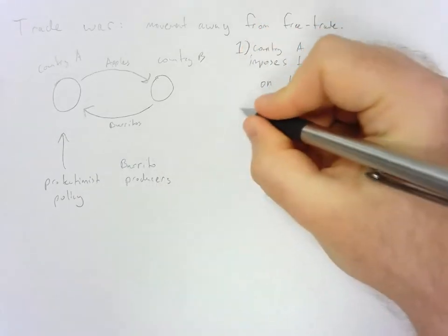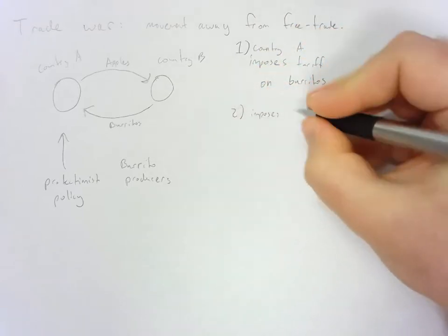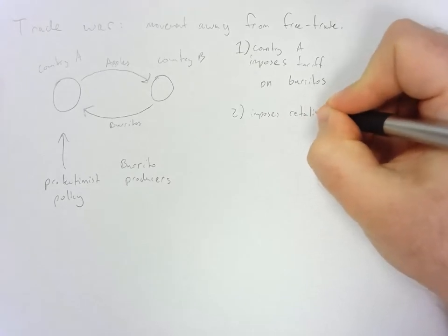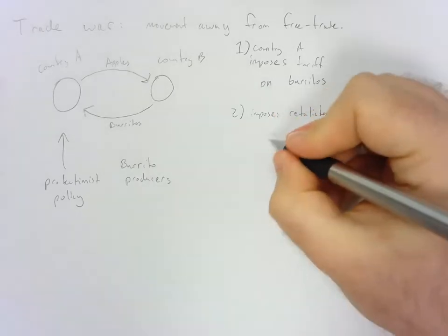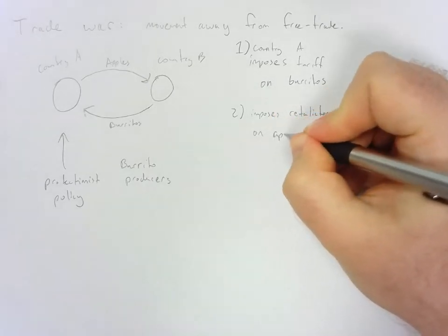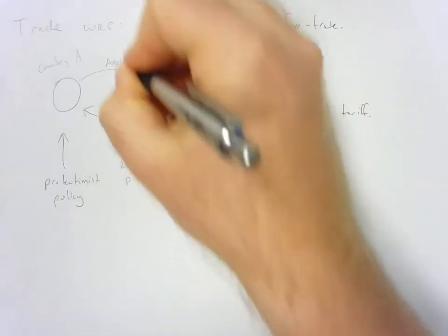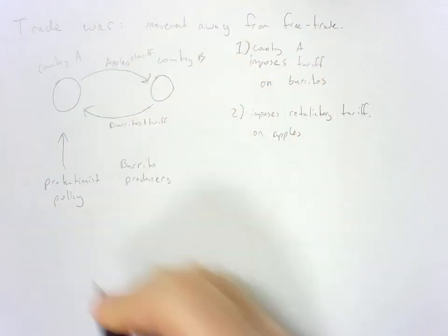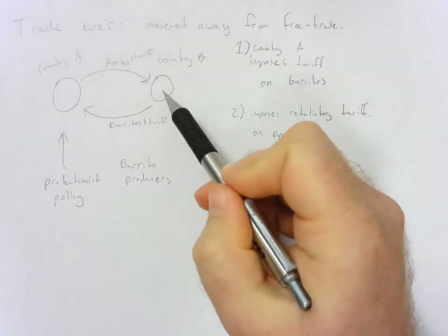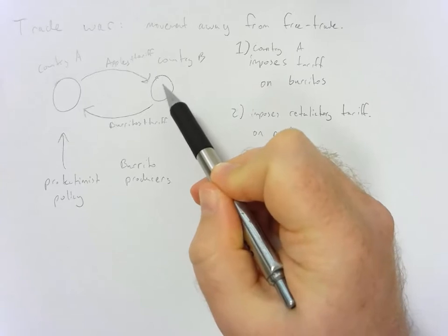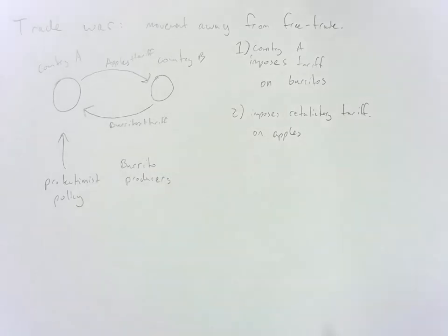So what they do is country B imposes a retaliatory tariff on apples. So all of a sudden burritos have a tariff, and now apples have a tariff. So there's this retaliatory tariff on apples. And so now country B can have its domestic producers of apples do a little bit better because now the imported apples are going to be at a higher price.